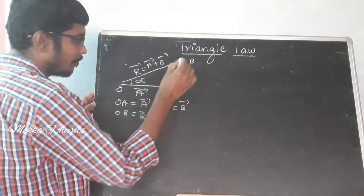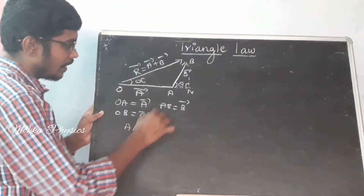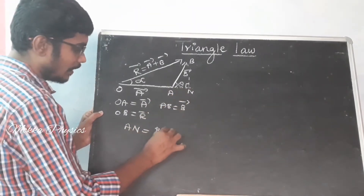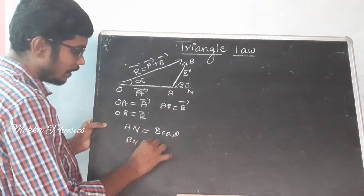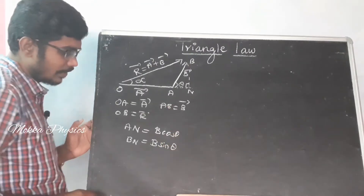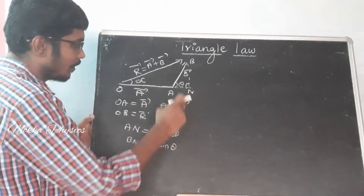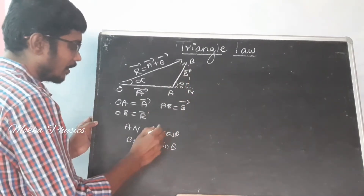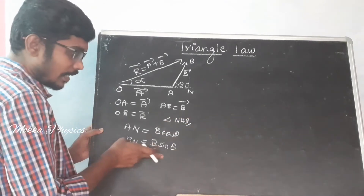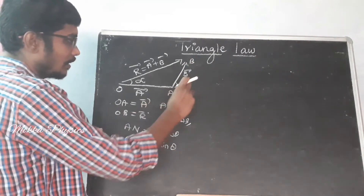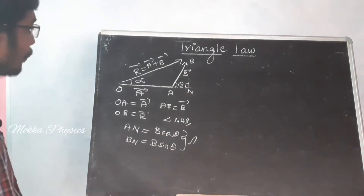You draw a perpendicular line and call the foot N. Near this point, you can identify the component B cosθ along the direction of A. From this, B sinθ is the perpendicular component. So you apply sine and cosine into the triangle formula to find the two distances AN and NB, which you will put into the right-angle triangle.